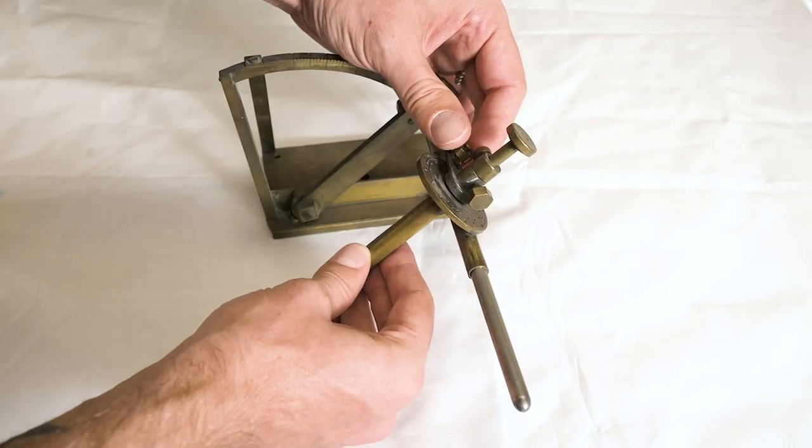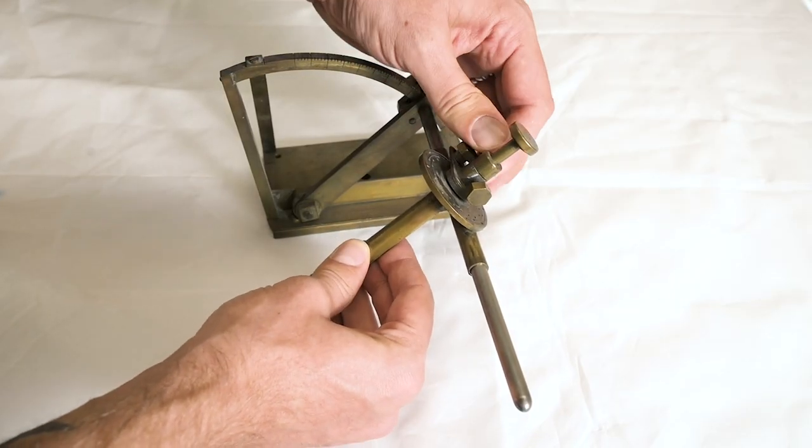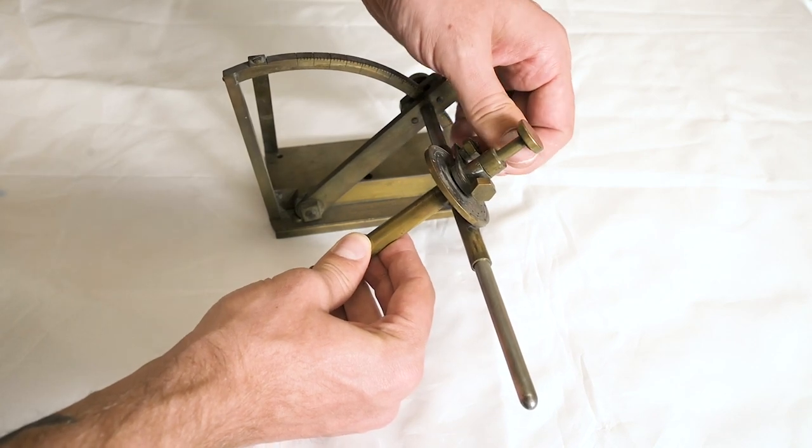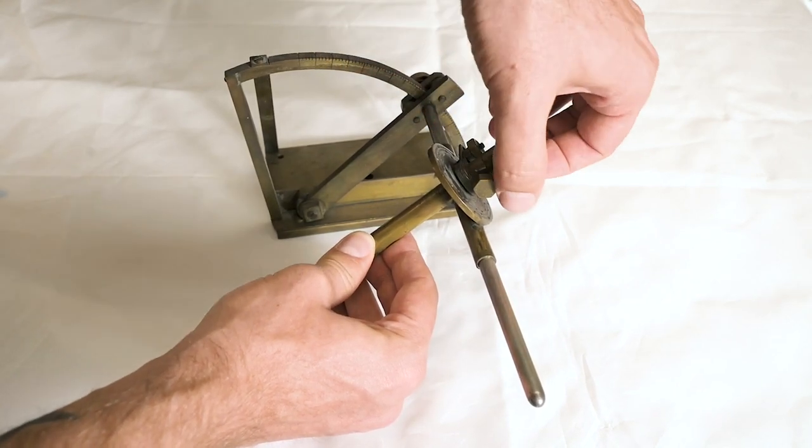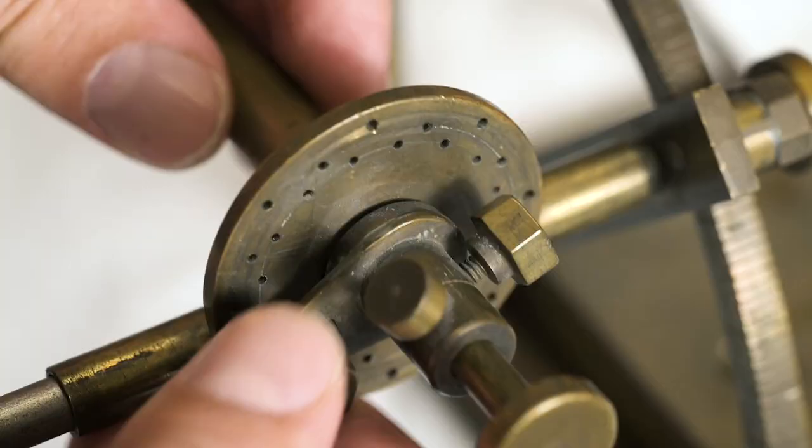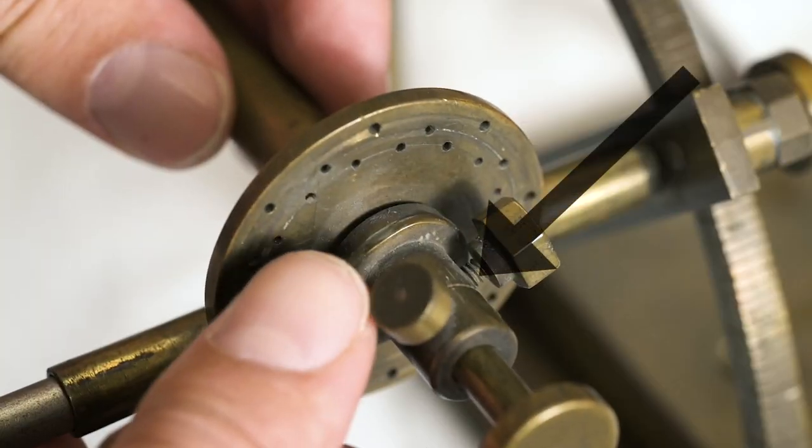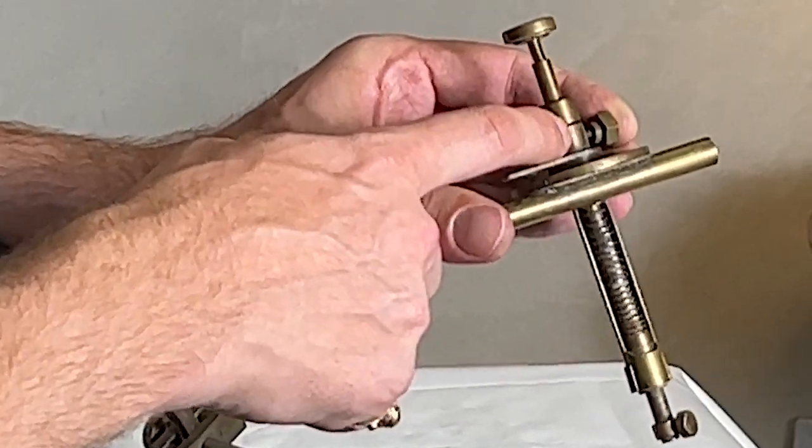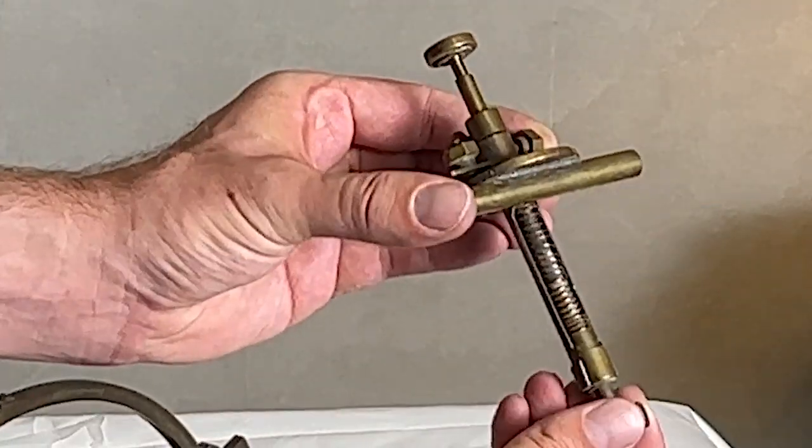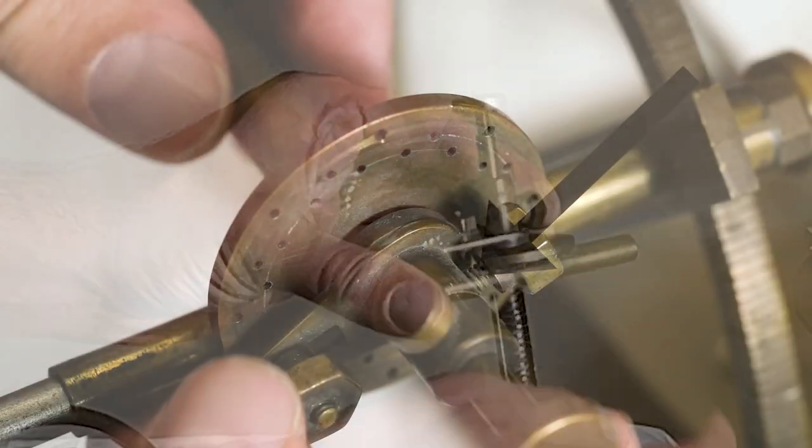This index gear would also be suitable for square step cuts, emerald cuts, and Portuguese cuts, but wouldn't work for certain other designs such as trillions. The quill also includes an adjustable cheater that would allow this equally spaced index gear to be adjusted one line to the left or one line to the right to stretch the design out for use with longer brilliant designs such as ovals.